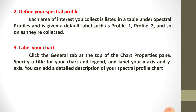The third step is to label your chart. After defining the spectral profile, you have to label your chart. Click the general tab at the top of the chart properties pane, then specify a title for your chart. You have to mention the title, chart legend, and label your axes — the x-axis and y-axis. You can also add a detailed description of your spectral profile chart, including the type of chart and the names of the axes.